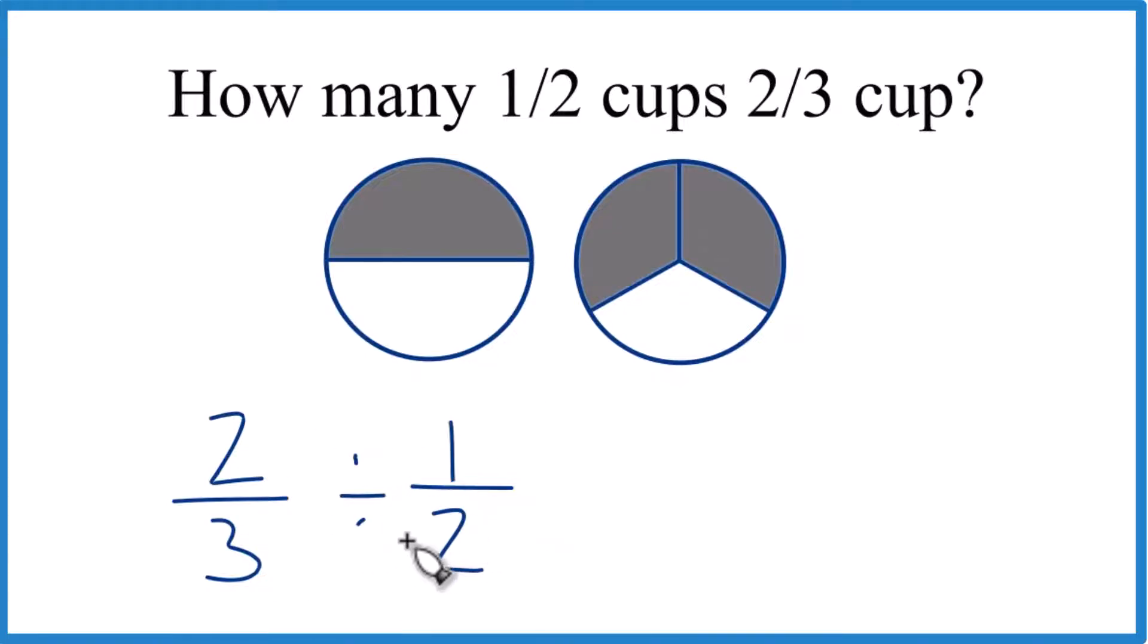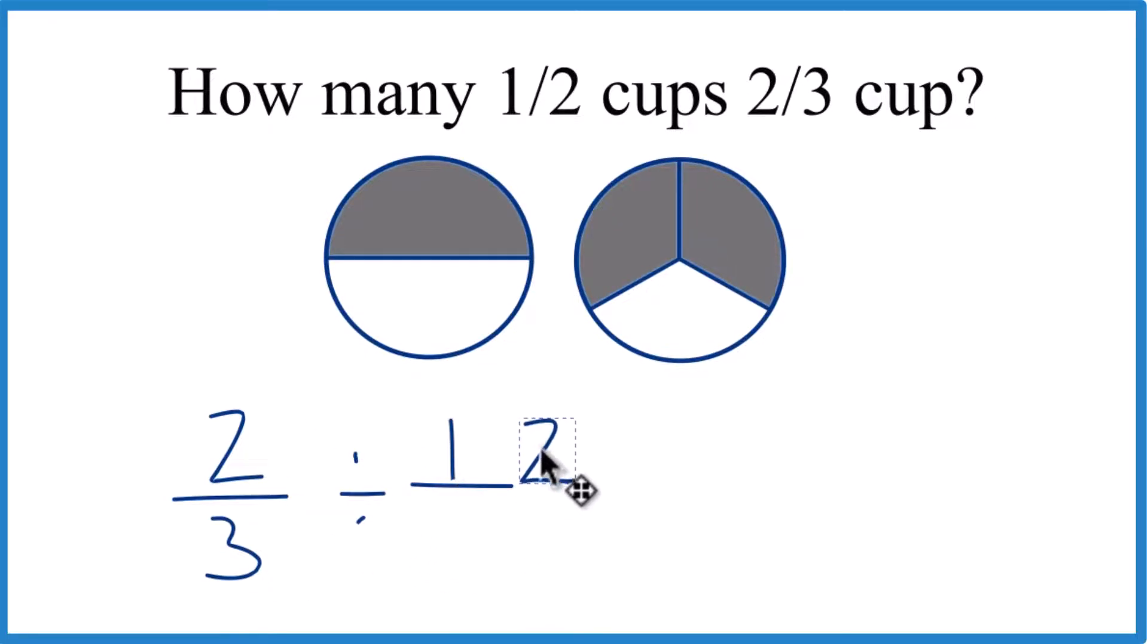When we're dividing fractions, we can make it easier. We take the two, move it up here, and the one down here. That's the reciprocal. Then instead of division, we multiply.